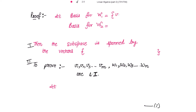The basis for W1 is v1, v2, v3, up to vm — these are the basis for W1 as we have done in the previous assignment. And the basis for W2 we have taken as w1, w2, w3, up to wn.